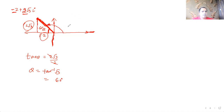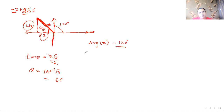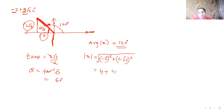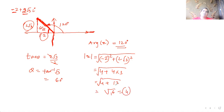Since the complex number is in quadrant two, the principal argument is 180° - 60° = 120°. So arg(z) = 120°. The modulus is √((-2)² + (2√3)²) = √(4 + 12) = √16 = 4.